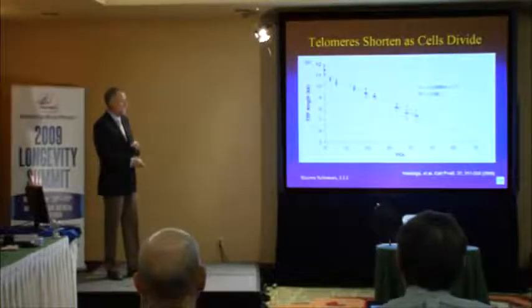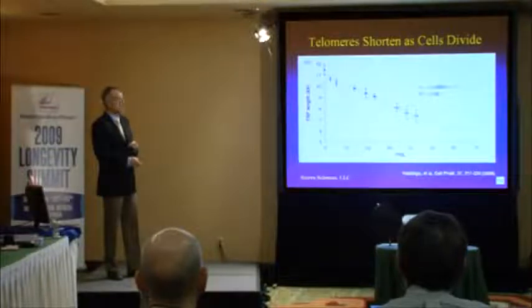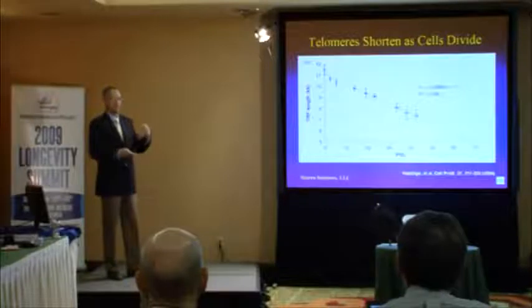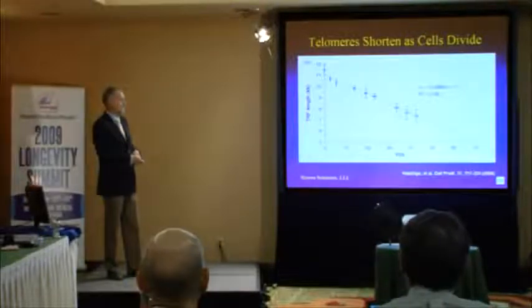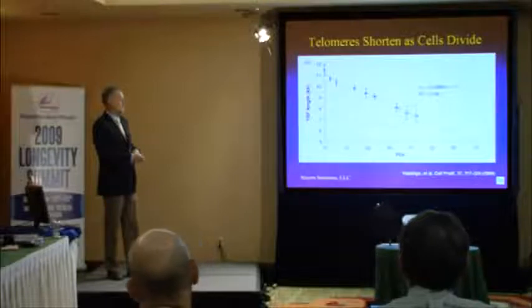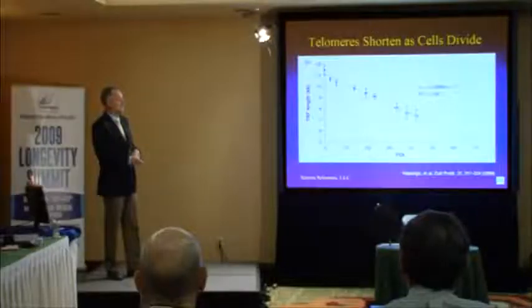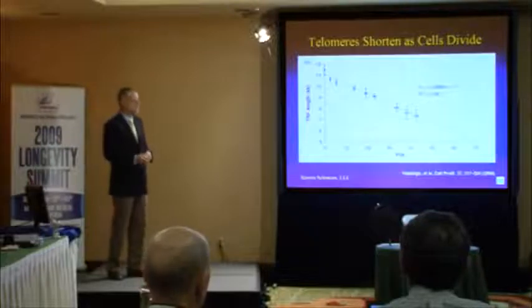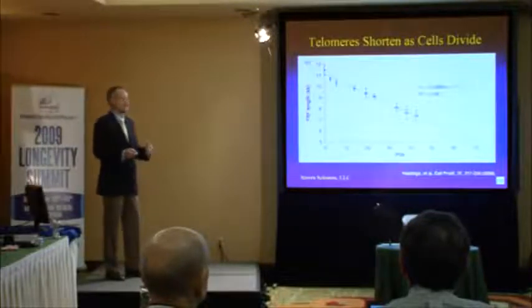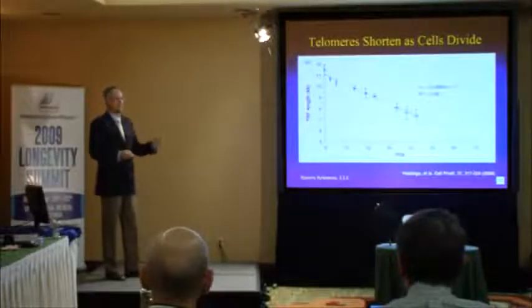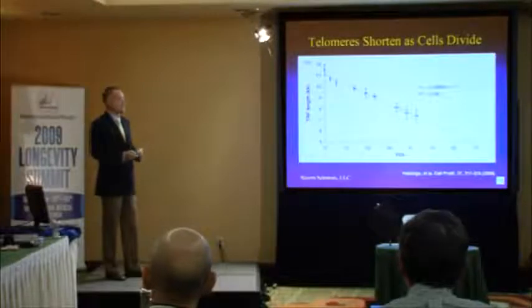This graph here shows population doubling level. The x-axis is essentially the number of times cells divide in a petri dish — when we take human fibroblast cells and grow them in a petri dish, this is the kind of experiment we do for population doubling levels. The y-axis is showing the length of the telomeres. At the beginning the telomeres are long, but in a very linear fashion with cell division, the telomeres get shorter. So this is a fairly accurate clock — you can take the length of a telomere and tell approximately how many cell divisions have occurred.